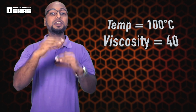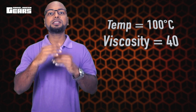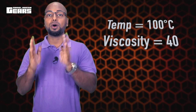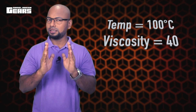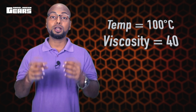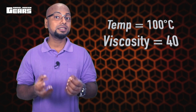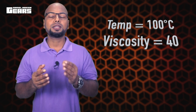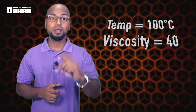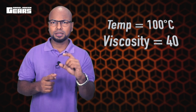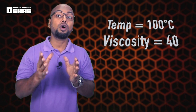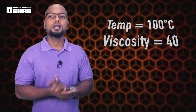The 40 refers to a specific viscosity level. That means if your bike or car engine reaches 100 degrees Celsius and the engine oil is tested at 100 degrees Celsius, the viscosity level will be 40, 30, or 50 — depending on the grade shown on the bottle. That is the full meaning of 10W-40.